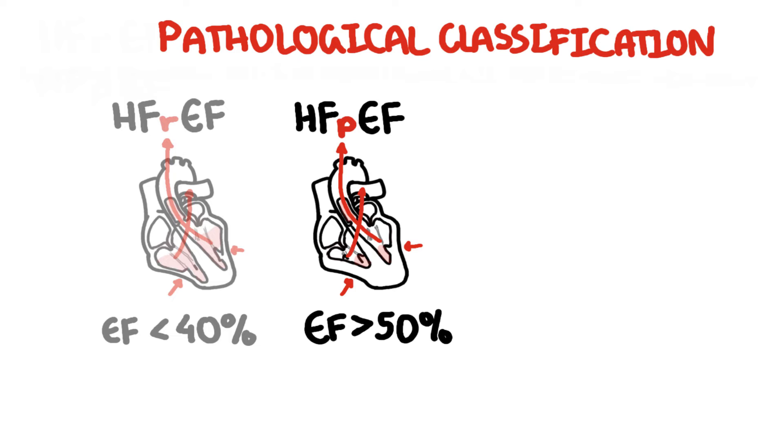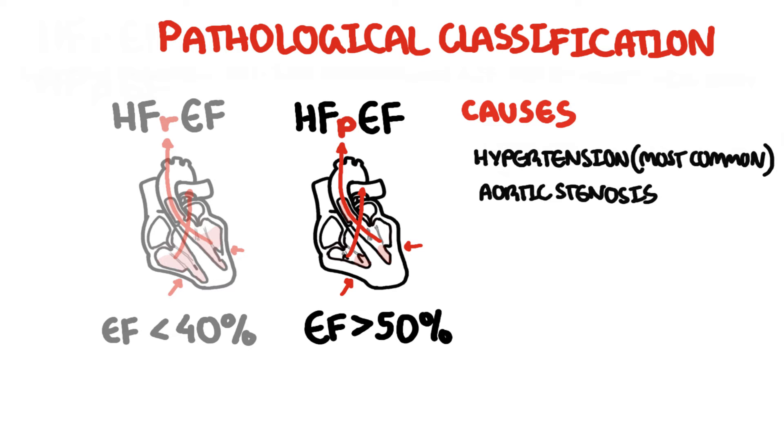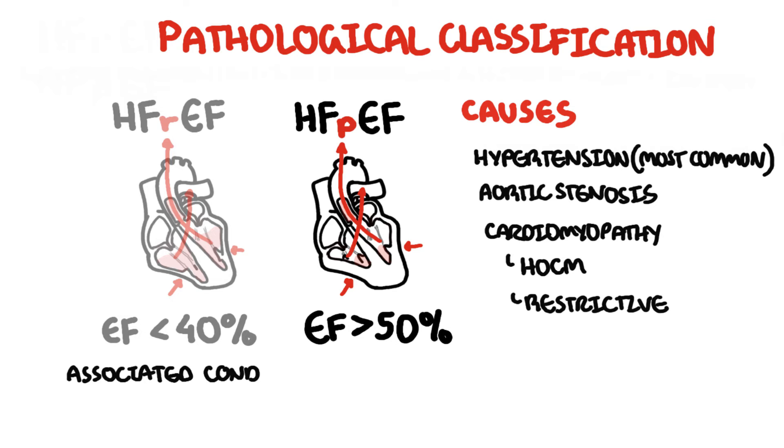The distinction is important because the treatment of these two groups are different. Patients with ejection fraction of 41% to 49% are classified as preserved ejection fraction, and their treatment is usually under this category as well. Heart failure with preserved ejection fraction, previously known as diastolic heart failure, accounts for approximately 50% of all heart failure cases. The most common cause is hypertension, less common aortic stenosis, and then cardiomyopathies such as hypertrophic obstructive cardiomyopathy, restrictive and infiltrative cardiomyopathies. Heart failure with preserved ejection fraction is also associated with other conditions such as obstructive sleep apnea, diabetes, and obesity.